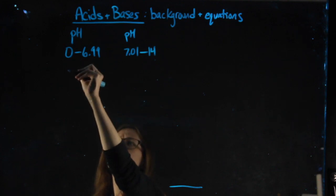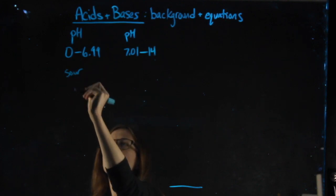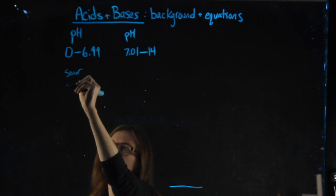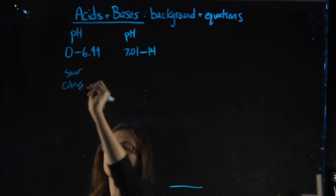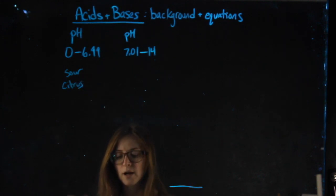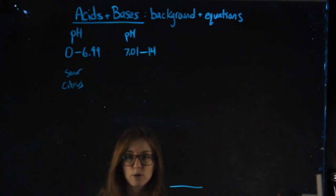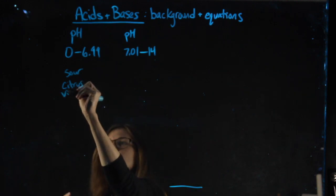Acids tend to be like sour. A lot of examples are things like citrus, like lemon juice is an acid people know. People know that you have stomach acid, which is hydrochloric acid. That's acidic. Vinegar is also acidic.